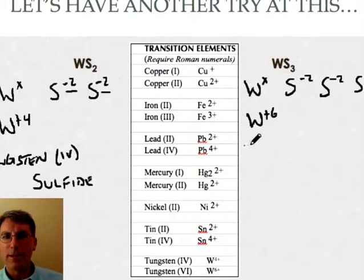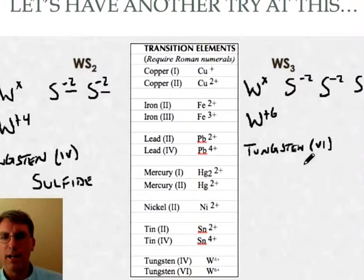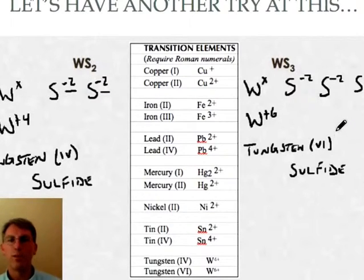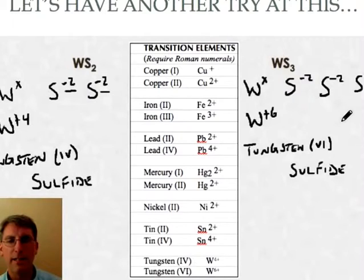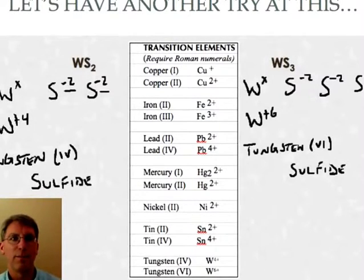And when I name it I'm going to say that it is tungsten with a six charge VI sulfide. Now if for any reason you don't know your Roman numerals from say one to eight it's probably a safe bet then what you should do now at this point is go through and look them up because you will need to know your Roman numerals from one to eight. That'd be a pretty safe bet.